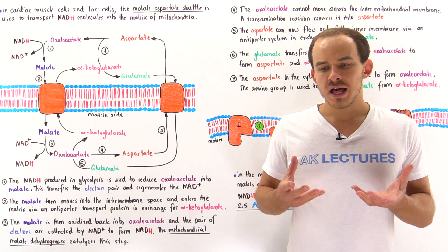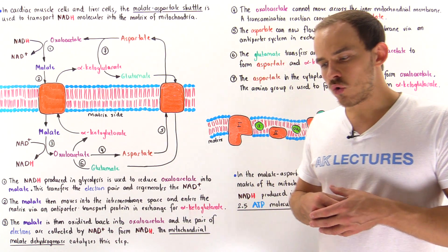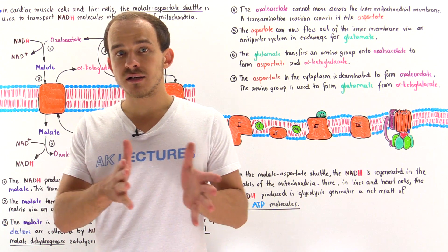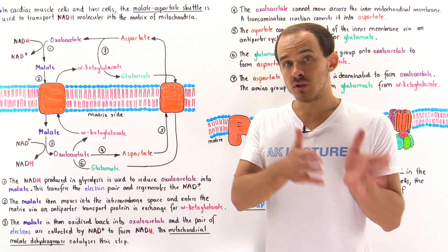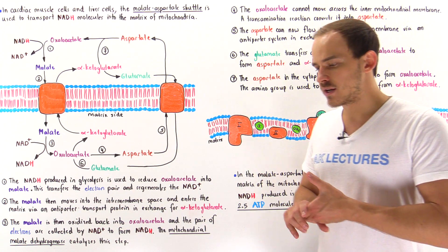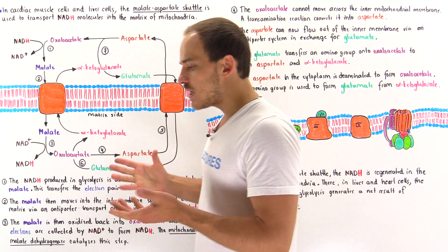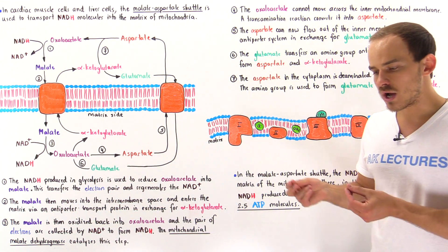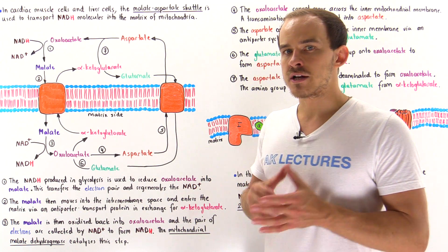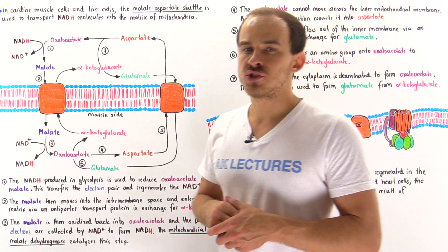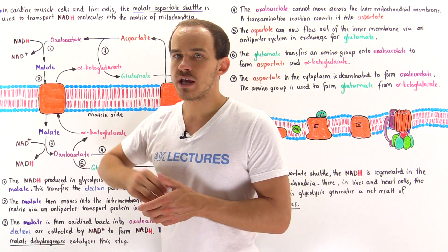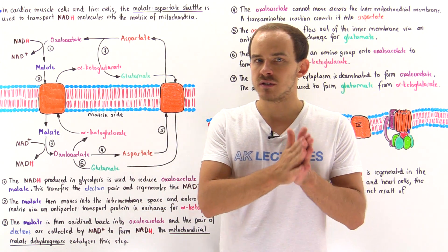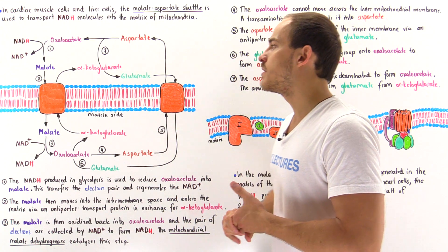Skeletal muscle cells use a process called the glycerol-3-phosphate shuttle to move NADH molecules produced in the glycolytic pathway from the cytoplasm into the electron transport chain of the inner membrane of the mitochondria. Other cells, such as cardiac muscle cells and liver cells, use a slightly different shuttle process known as the malate-aspartate shuttle, which moves NADH produced in glycolysis into the matrix of the mitochondria.